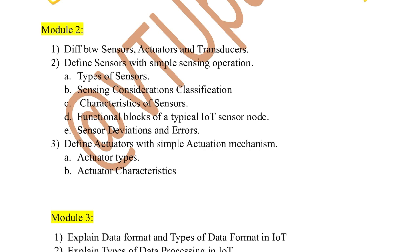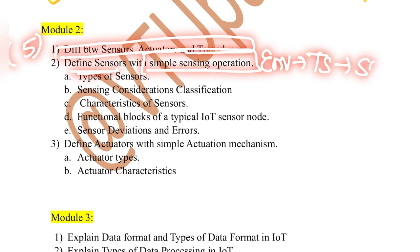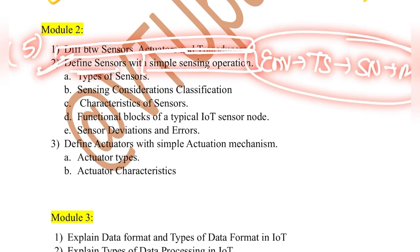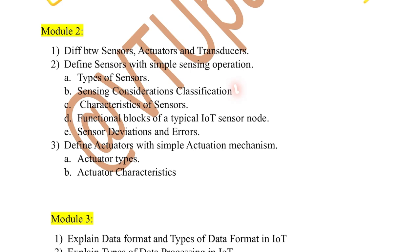Moving on to the second module — it's very easy and you can easily score marks here. Right from the differences between sensors, actuators, and transducers, which could be asked for five marks. Then define sensors with a simple sensing and operation diagram — environment, temperature sensor, sensor node, and monitor. Then types of sensors, followed by classifications, characteristics, considerations, properties, sensor operation, and power. Characteristics of sensors include sensor resolution, accuracy, and processing.